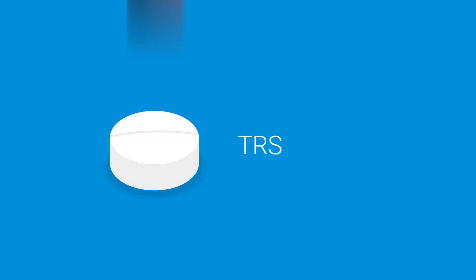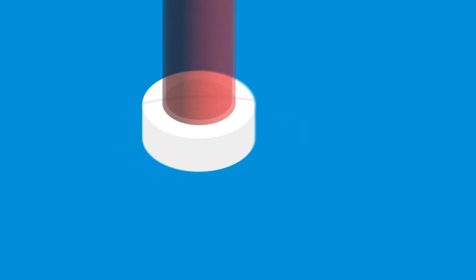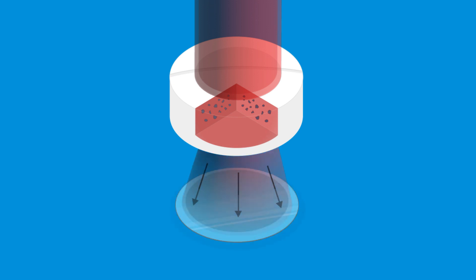TRS works by shining laser light through the sample. The sample causes the laser beam to scatter, creating Raman photons.